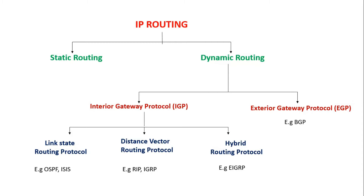The disadvantage of using dynamic routing is that in some cases it's hard to implement, and if we are not using any authentication for neighbor relationship establishment, then it's less secure. It also has an overhead problem on resources such as CPU, memory, and link bandwidth.